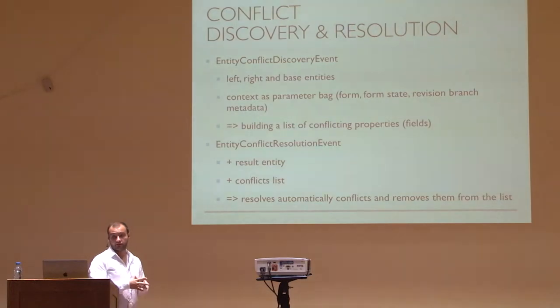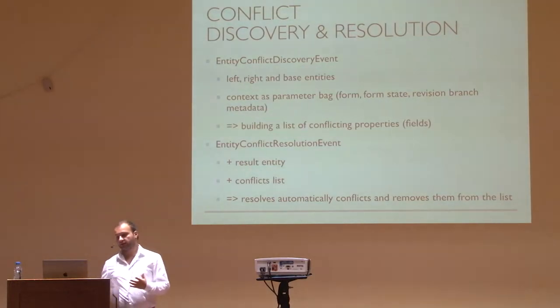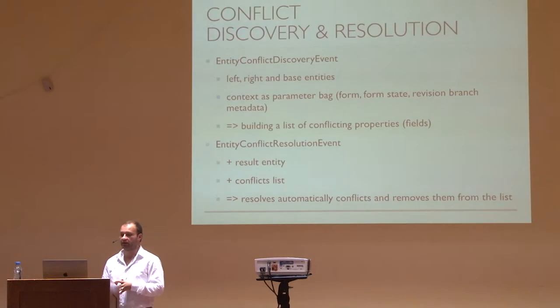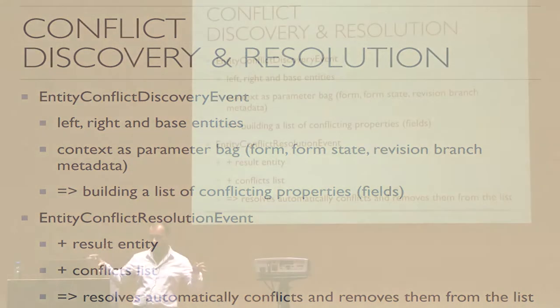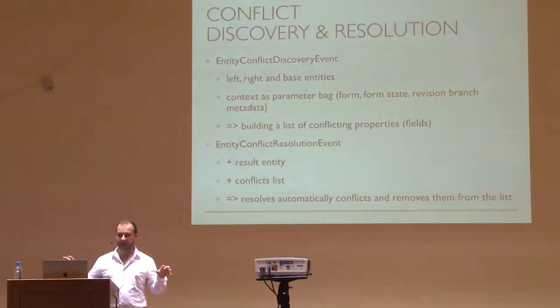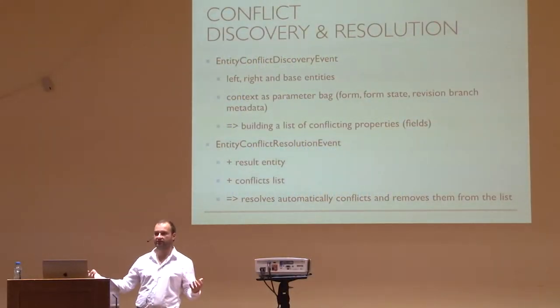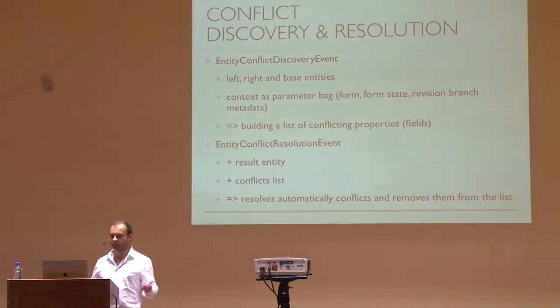When we compare to detect conflicts, we do a three-way comparison. For that, we need the entity that was used to initially build the form, the current entity being generated from the user input, and the entity currently stored in storage — the newest version of it, for example when another user already saved during our form session. The entities are named left, right, and base. Base is the initial entity — the parent of the two others. Left is the one I'm currently editing, and right is the newest version from storage.